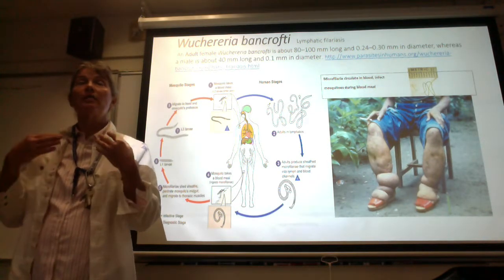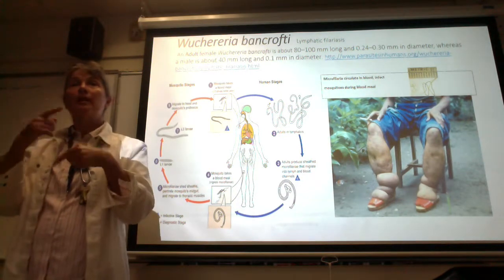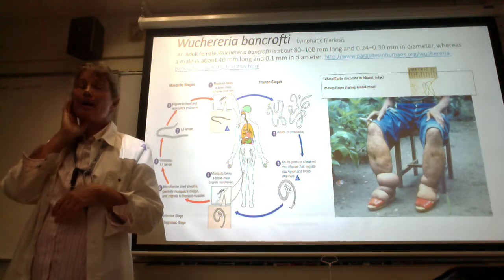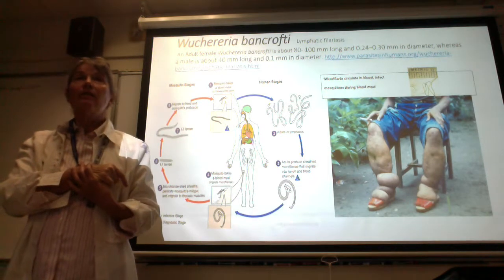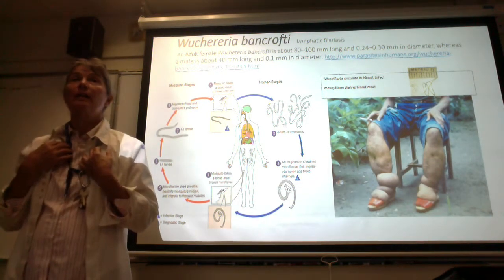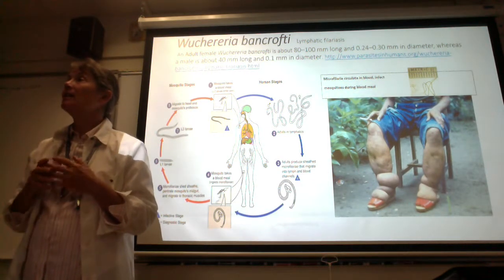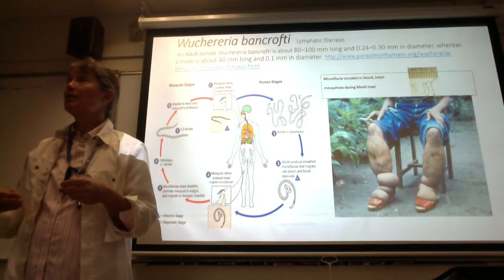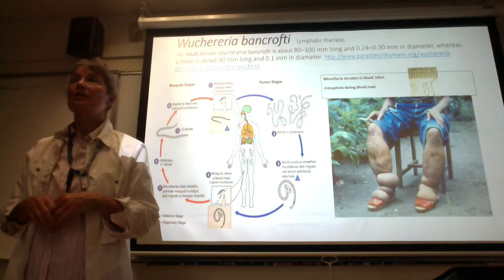When the female mosquito takes her blood meal, she gets infected with the microfilariae. They undergo development within the mosquito and eventually make it up to her feeding mouthparts, so when she takes another meal she's going to inject Wuchereria bancrofti into us. They first travel in the blood vessels and then get into the lymphatic vessels where they grow into adults, starting the cycle all over again by giving birth to little microfilariae.